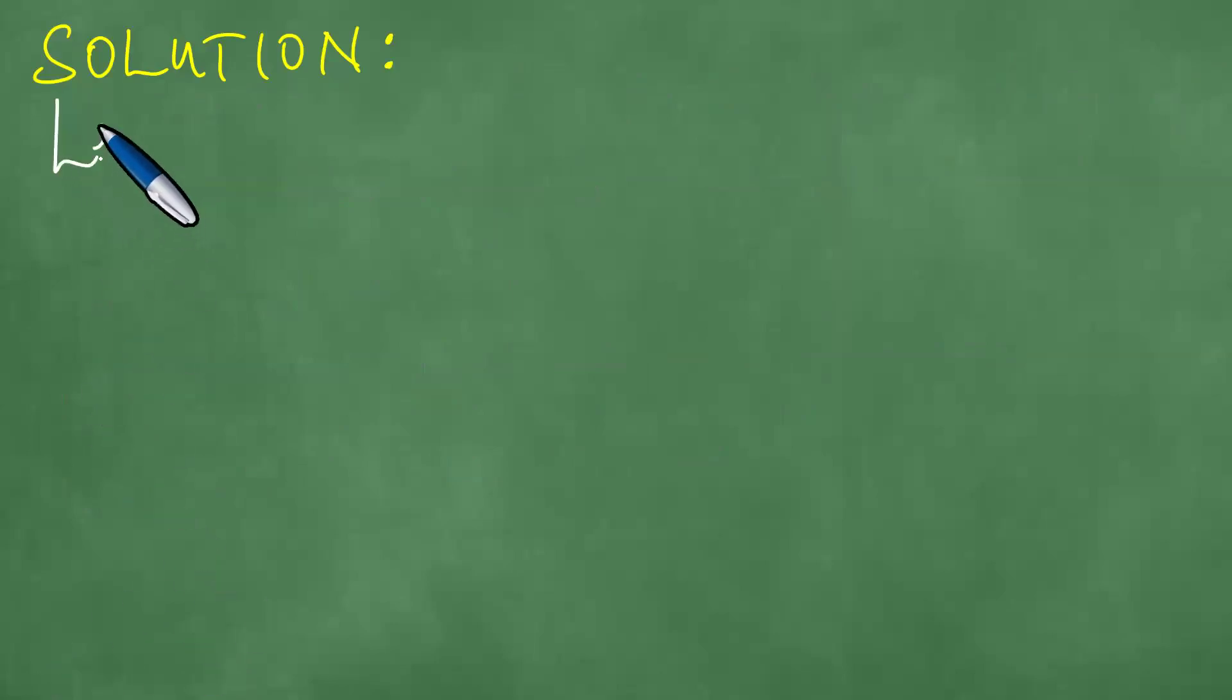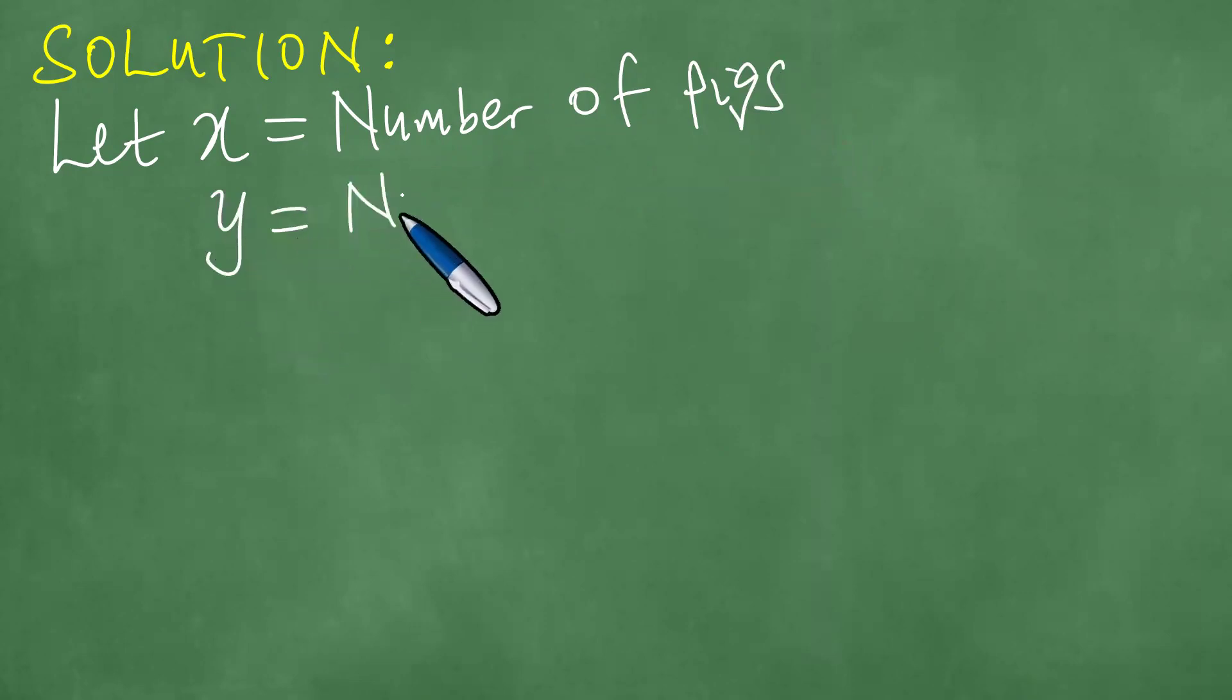We let X be equal to the number of pigs. Y becomes the number of chickens.